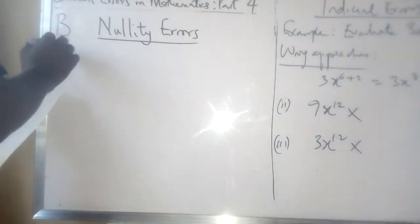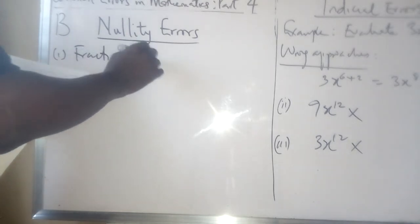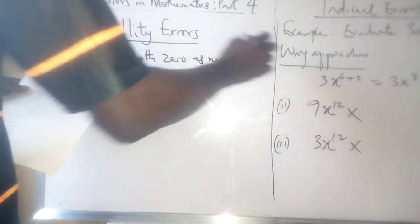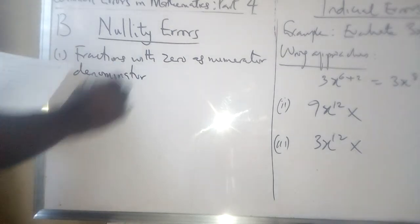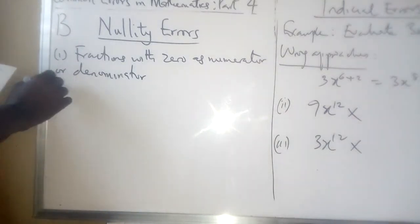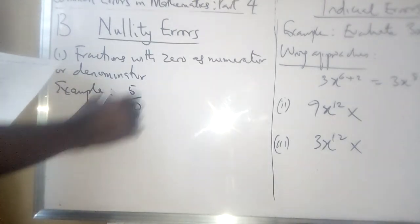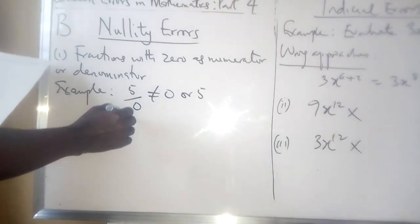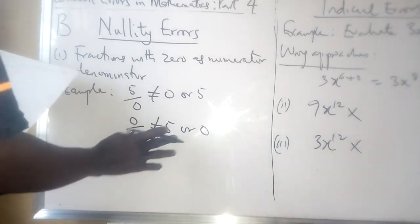Nullity errors. The first example involves fractions with 0 as numerator or denominator. Fractions with 0 as numerator or denominator. For example, 5 all over 0 is not equal to 0 or 5 — that would be wrong. And 0 all over 5 is not equal to 5 or 0 either — that is also wrong.